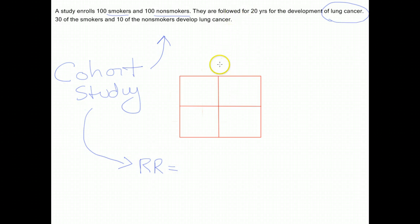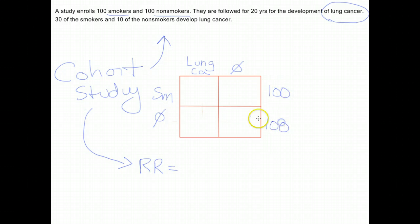Let's populate this 2x2 table. By convention, in the 2x2 table, disease goes across the top. So we'll have lung cancer and no lung cancer. Exposure status goes across the side, so we'll have smokers and nonsmokers. I enrolled 100 smokers and 100 nonsmokers.